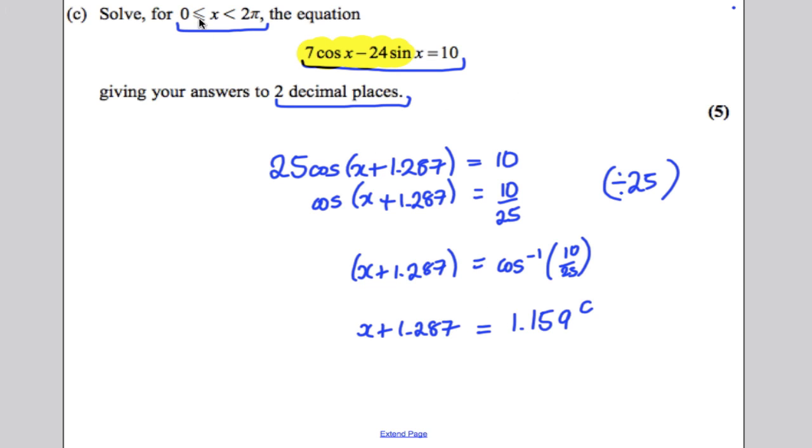Now, we want solutions between 0 and 2 pi. Currently, if we subtract 1.287 off this, we'll get a negative answer. That's not one of the solutions we want. So at this stage, let's draw our graph out. Now, because we're solving x plus 1.287, cos of x plus 1.287, let's extend our range from 0 to 2 pi plus this.